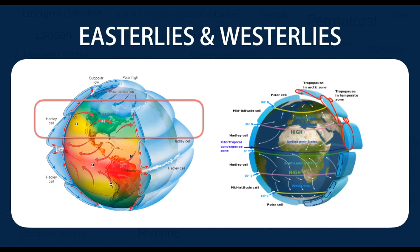The westerlies, also called the anti-trades or prevailing westerlies, are winds from the west towards the east in the middle latitudes between 30 and 60 degrees. They originate from the high pressure areas in the horse latitudes and tend towards the poles, steering extra-tropical cyclones in this general manner. These winds are predominantly from the southwest in the northern hemisphere and from the northwest in the southern hemisphere.